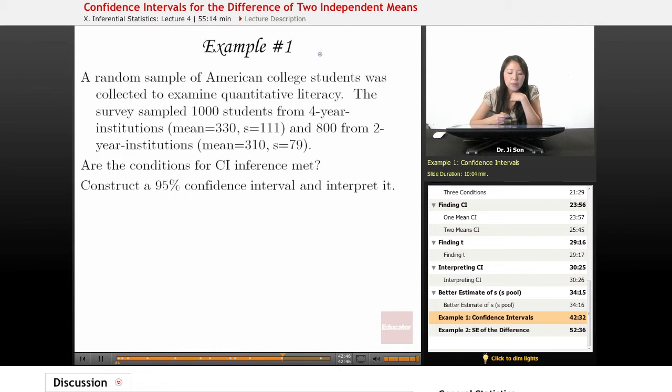The survey sampled 1,000 students from four-year institutions, this was the mean and standard deviation, and 800 from two-year institutions. Here's the mean and here's the standard deviation. Are the conditions for confidence intervals met? Also construct a 95% confidence interval and interpret it.